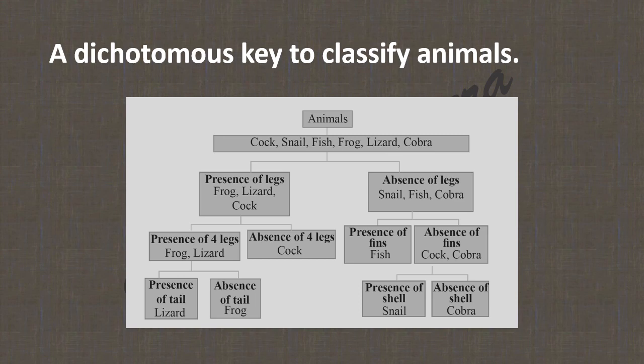On the other side, snail, fish, and cobra are divided by presence of fins: fish has fins; snail and cobra do not. Then snail and cobra are divided by presence of a shell: snail has a shell, cobra does not.